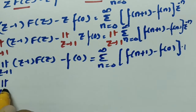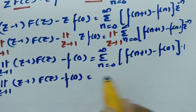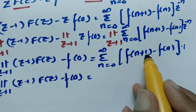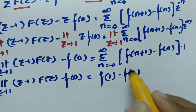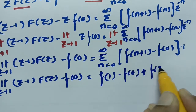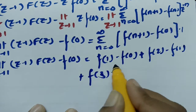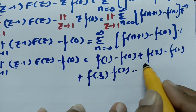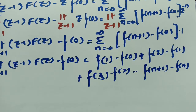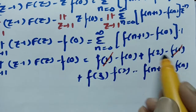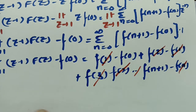So we have limit z tends to 1 of (z minus 1) into capital F(z) minus f(0) equals the telescoping sum. Substituting n equals 0: f(1) minus f(0); n equals 1: f(2) minus f(1); n equals 2: f(3) minus f(2); and so on up to f(n+1) minus f(n). All intermediate terms cancel — f(1), f(2), f(3), and f(n) all cancel.